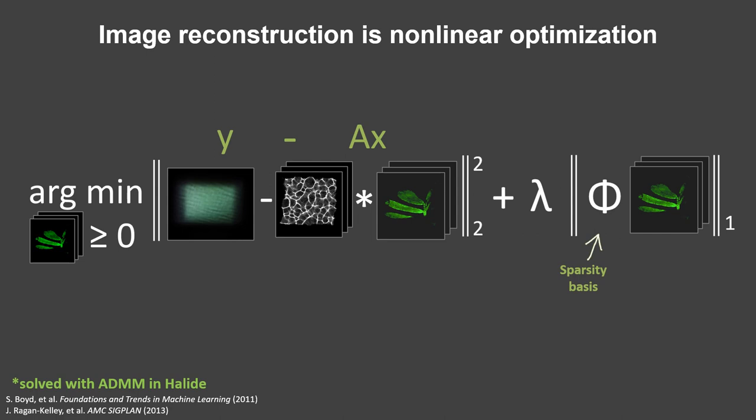Given your current estimate, you iteratively update the estimate of the object that you're trying to get at. And you might put some regularization or sparsity constraints.